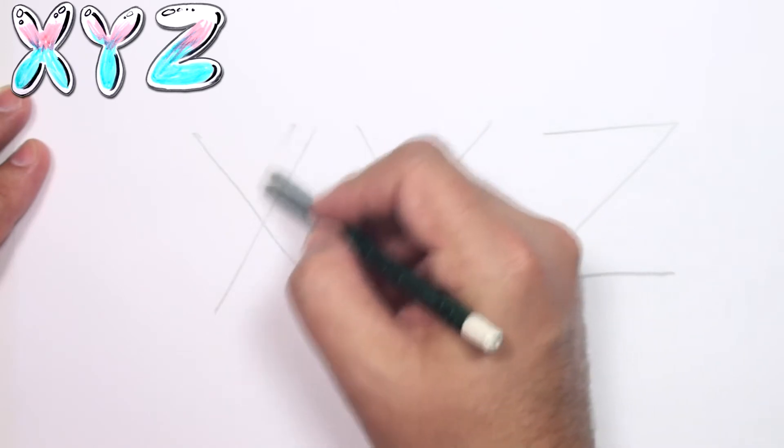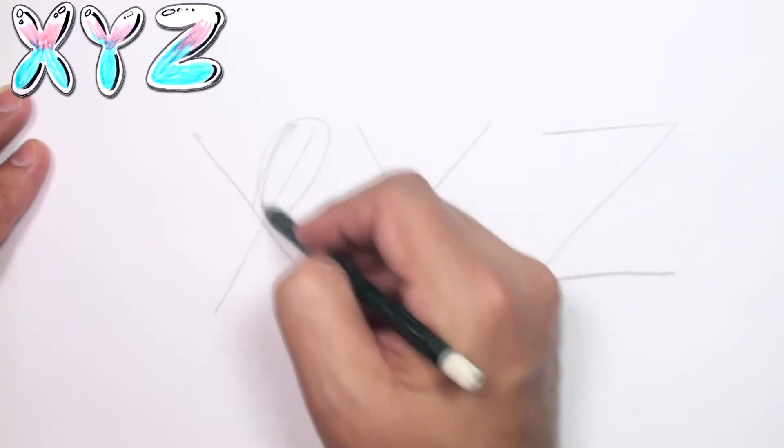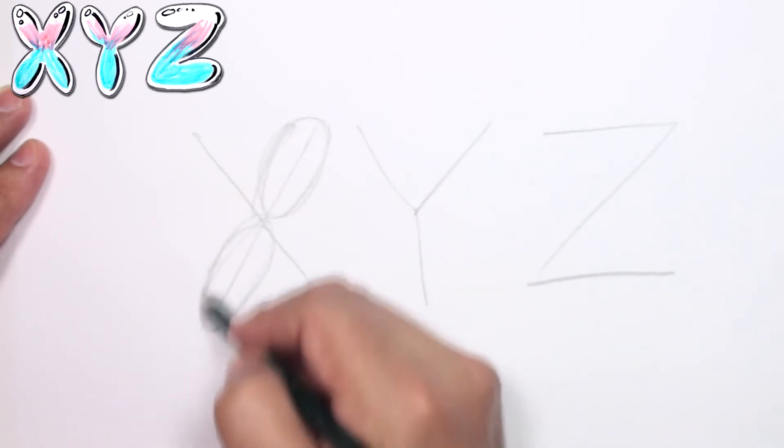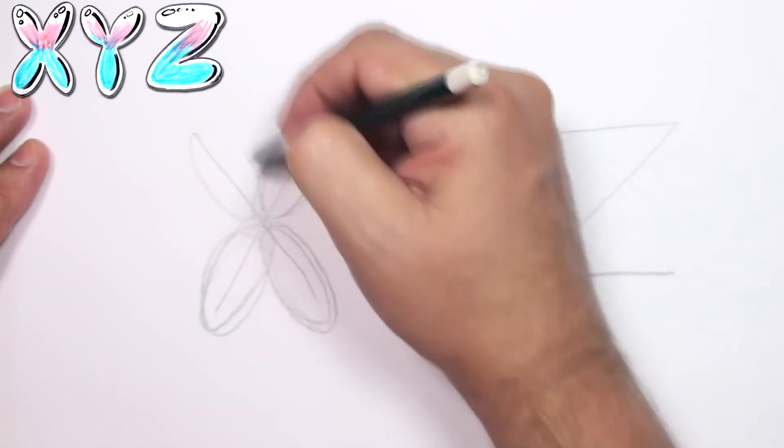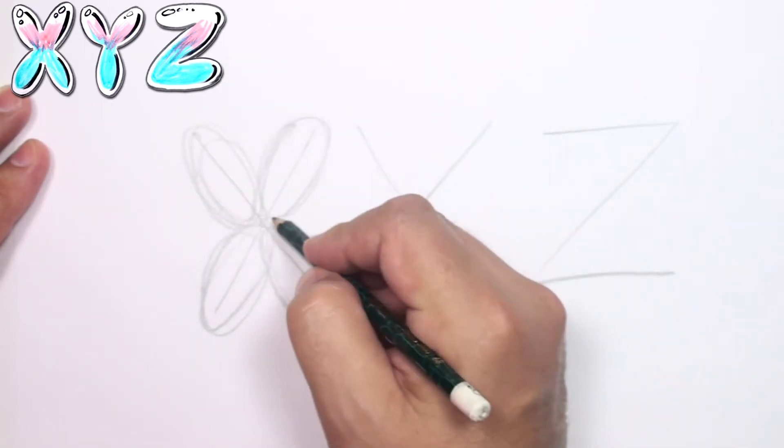All right, and here with the X, I'm going to do something a little different rather than going all the way across. Let's make a bubble for each branch here.